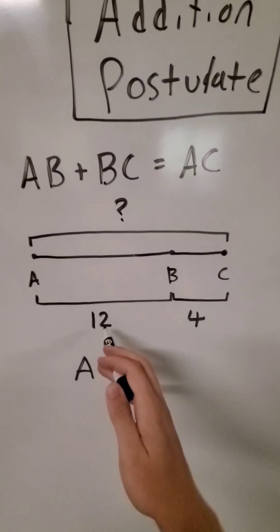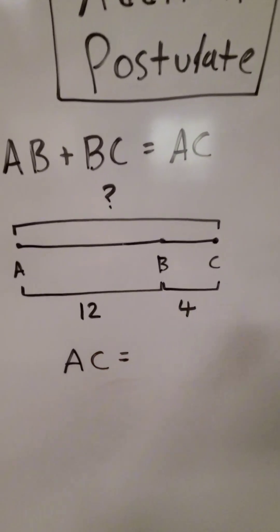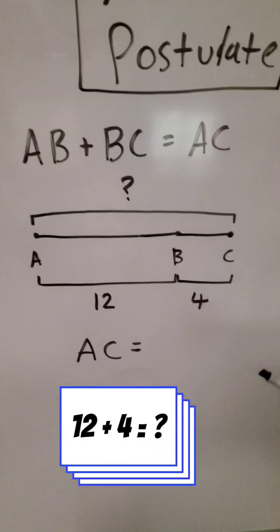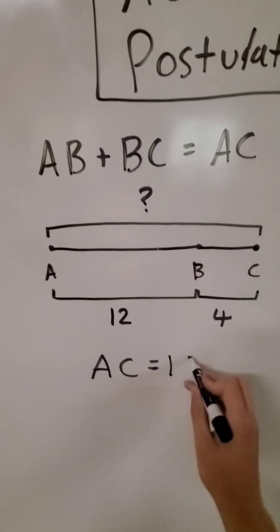So if one part is 12 and the other part is 4, you add the two parts together and you get the whole thing. AC is going to be 16.